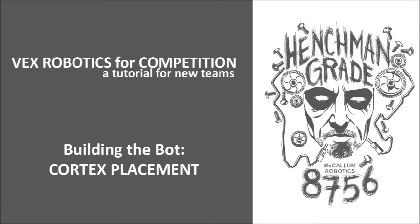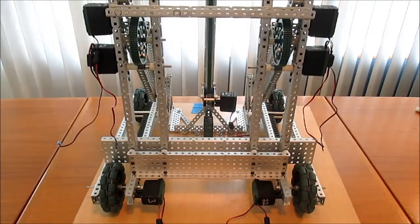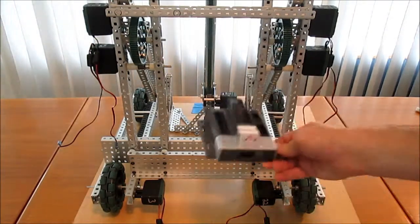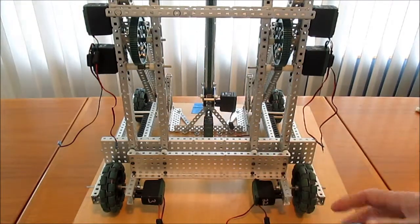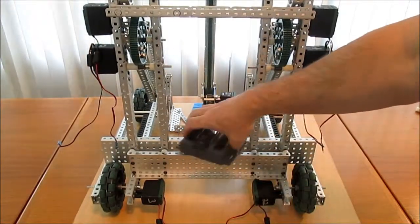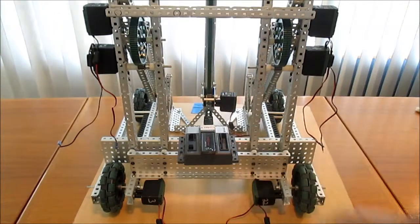Cortex placement. So we've got our build set up. We have a sense of where our motors are going to go when they're wired. We now need to consider exactly how we're going to place the cortex because there's some issues regarding that. You want to have lots of space around the Vexnet key. This would be a good configuration because there's not a lot of metal around it.